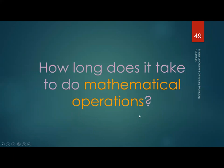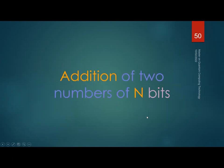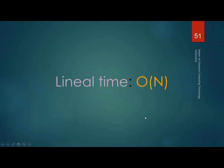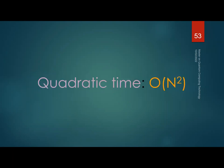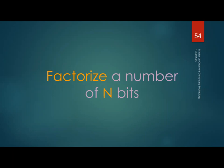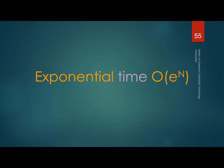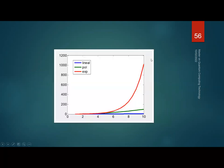How long do mathematical operations take? Adding two numbers of n bits takes linear time. Multiplying two numbers of n bits takes quadratic time. But factorizing a number of n bits takes exponential time — e to the power of n. When you plot this, exponential time takes much, much longer than polynomial or linear time.